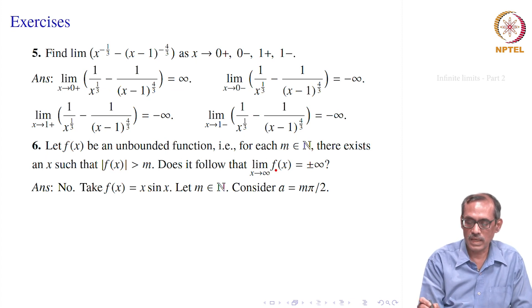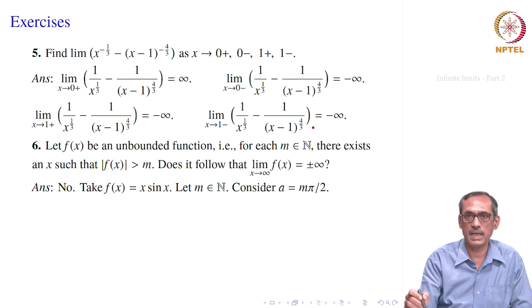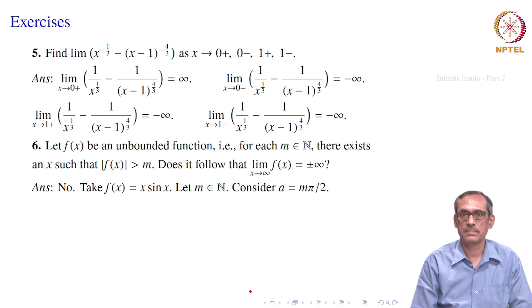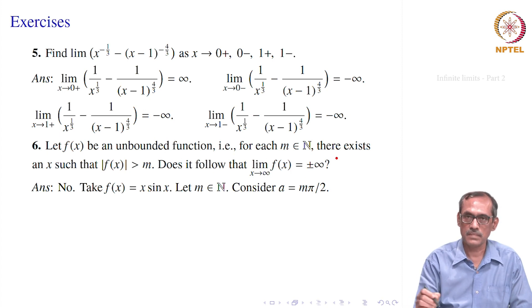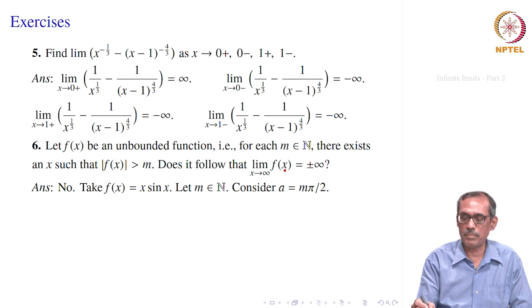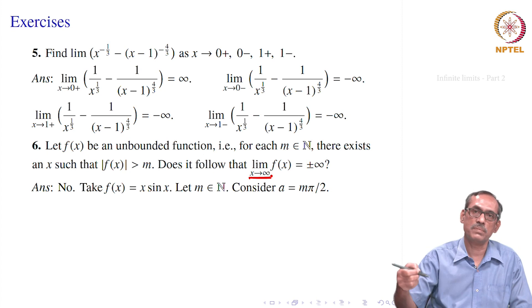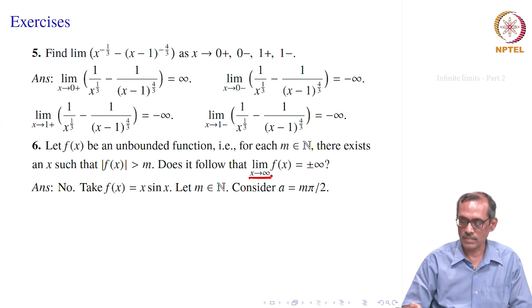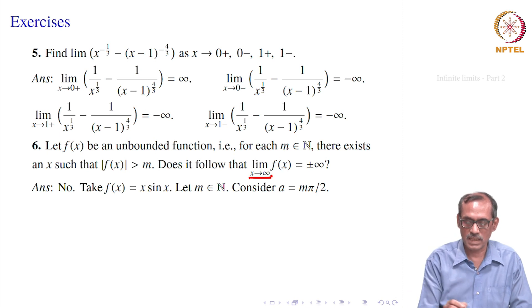The answer is usually not true. Being unbounded means for any m we can find one x with |f(x)| > m, but for lim_{x→∞} f(x) = ∞ we need |f(x)| to be large for all sufficiently large x — not just at isolated points. This condition may fail. For example, consider f(x) = x·sin(x).